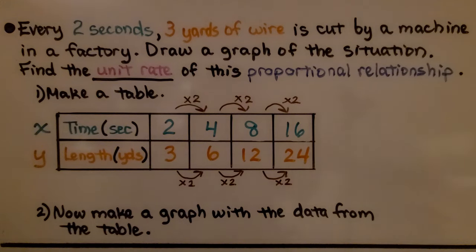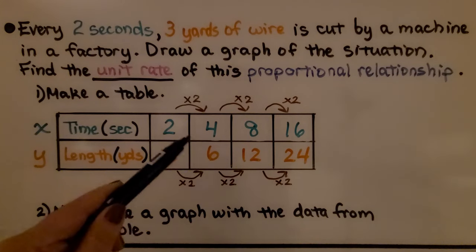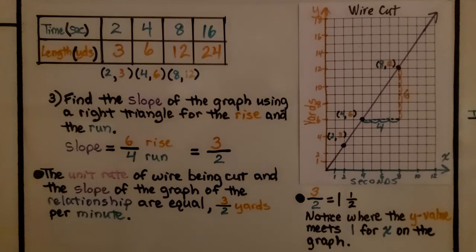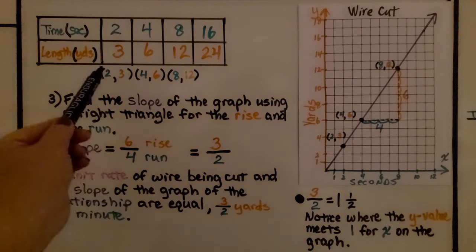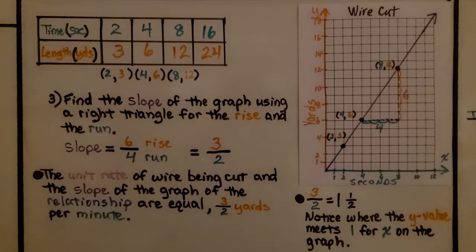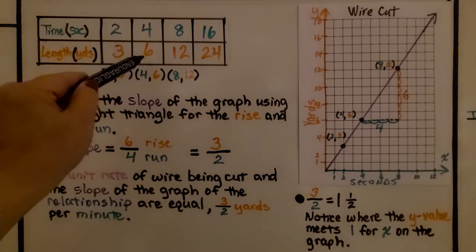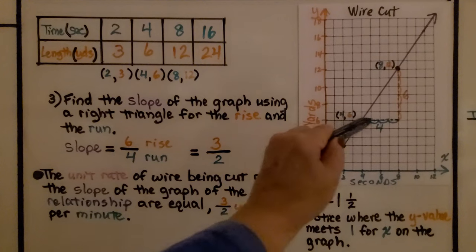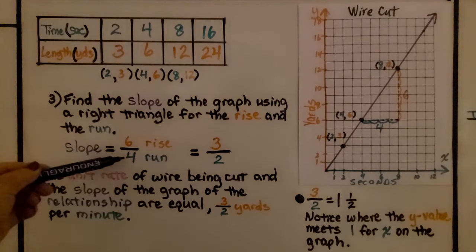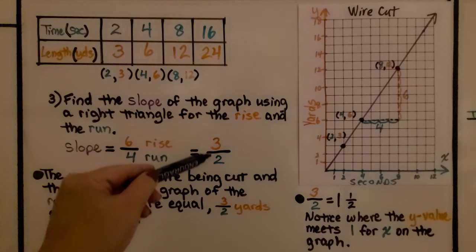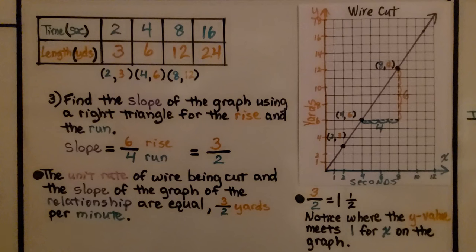Now we make a graph with the data from the table. We can make our ordered pairs by multiplying by two because it's a proportional relationship. We find the slope of the graph using a right triangle for the rise and the run. We have plotted our points using these values as our x and y ordered pairs. You can see we have the point (4, 6) and the point (8, 12). We count the rise and run for a right triangle and get a slope of six over four for rise over run, which reduces to three over two.